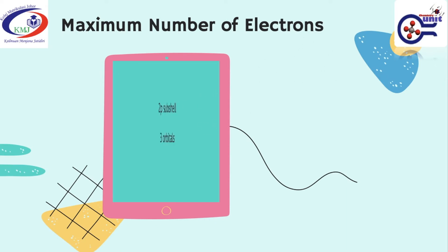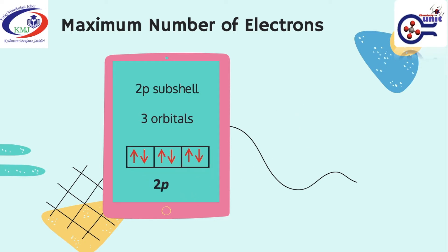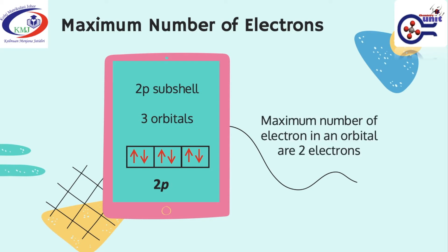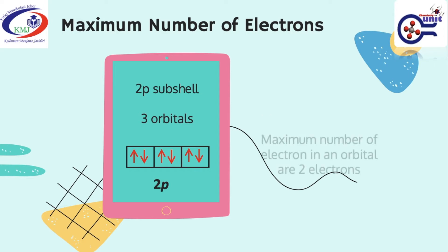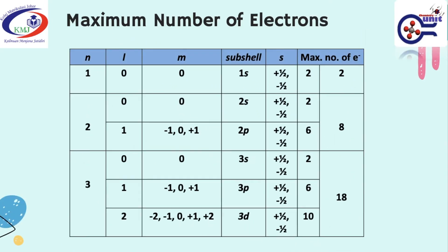For the 2P subshell, there are three orbitals: 2Px, 2Py, and 2Pz. The maximum number of electrons in an orbital is two. Looking at this table, when n is equal to 1, l is equal to 0, m is equal to 0, and the subshell is 1s. The 1s subshell only has one orientation due to one value of m. One orbital can be occupied with a maximum of two electrons, and each electron in the same orbital must have opposite spin. Therefore, there are two values of S representing two different spinnings.